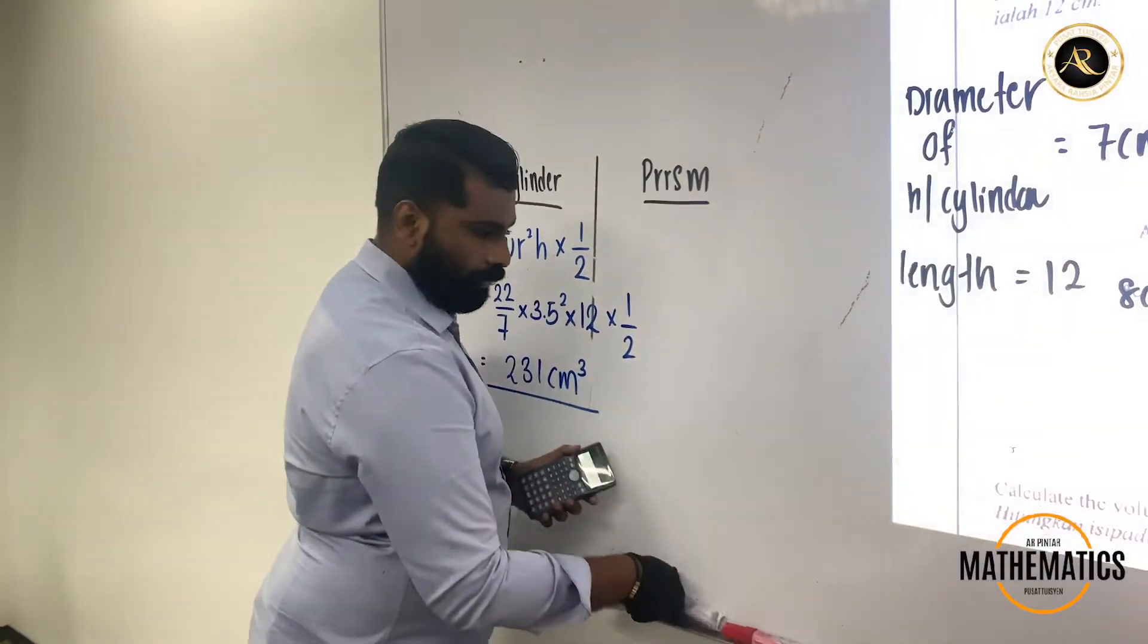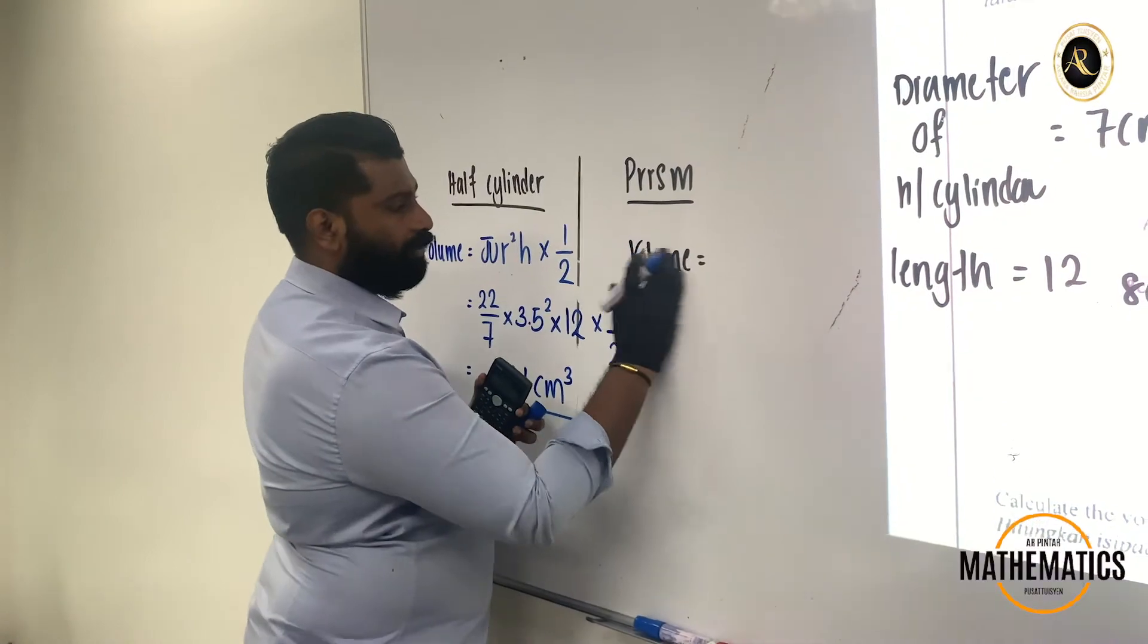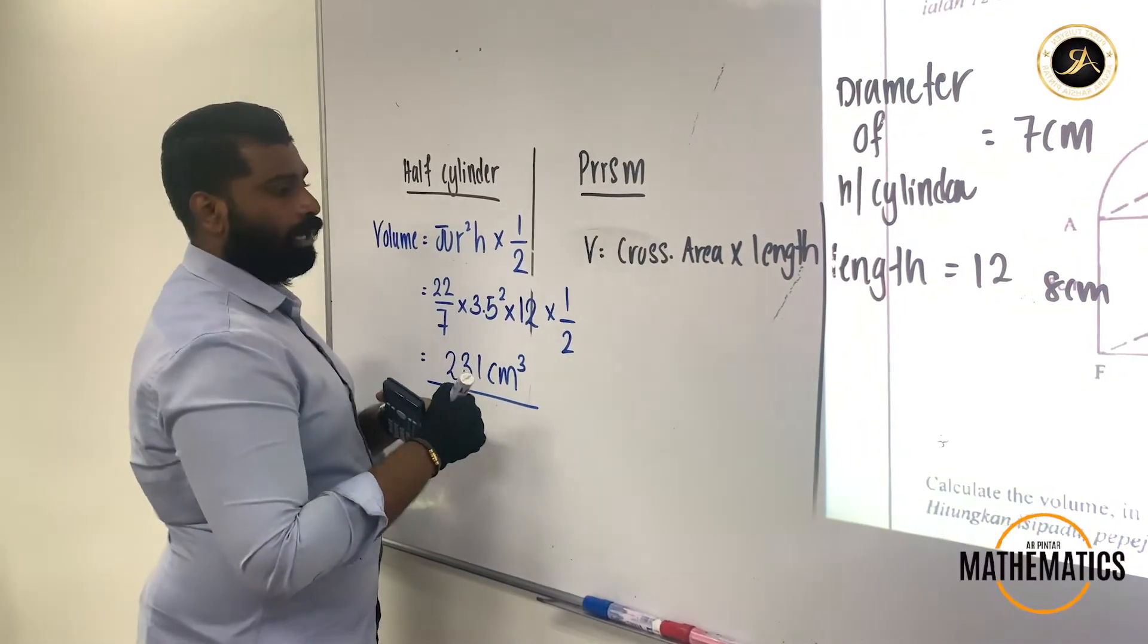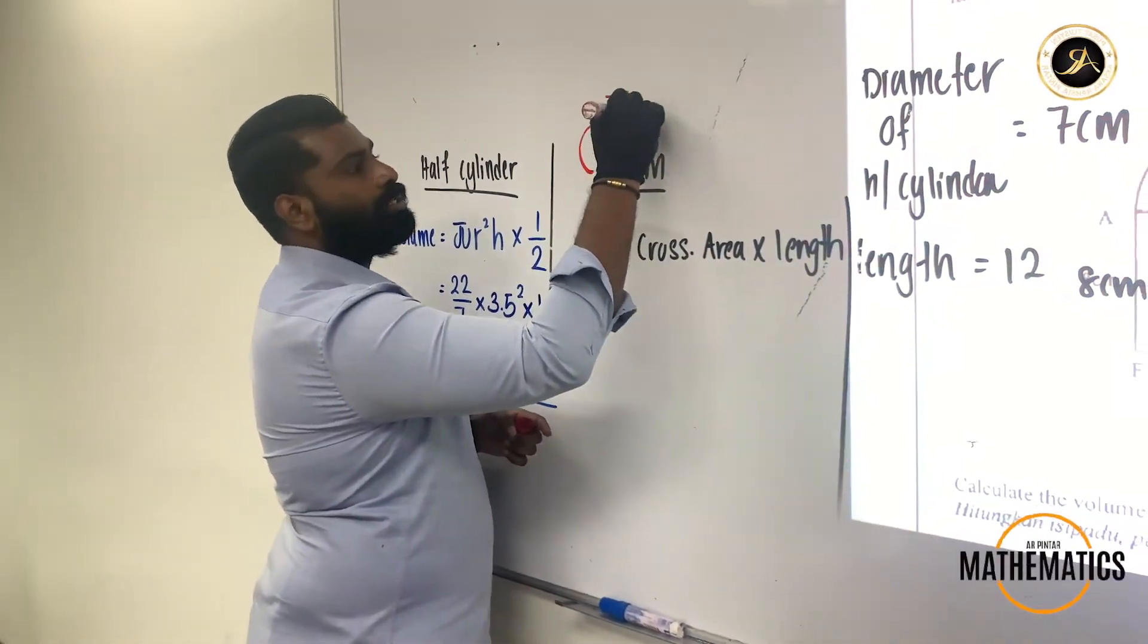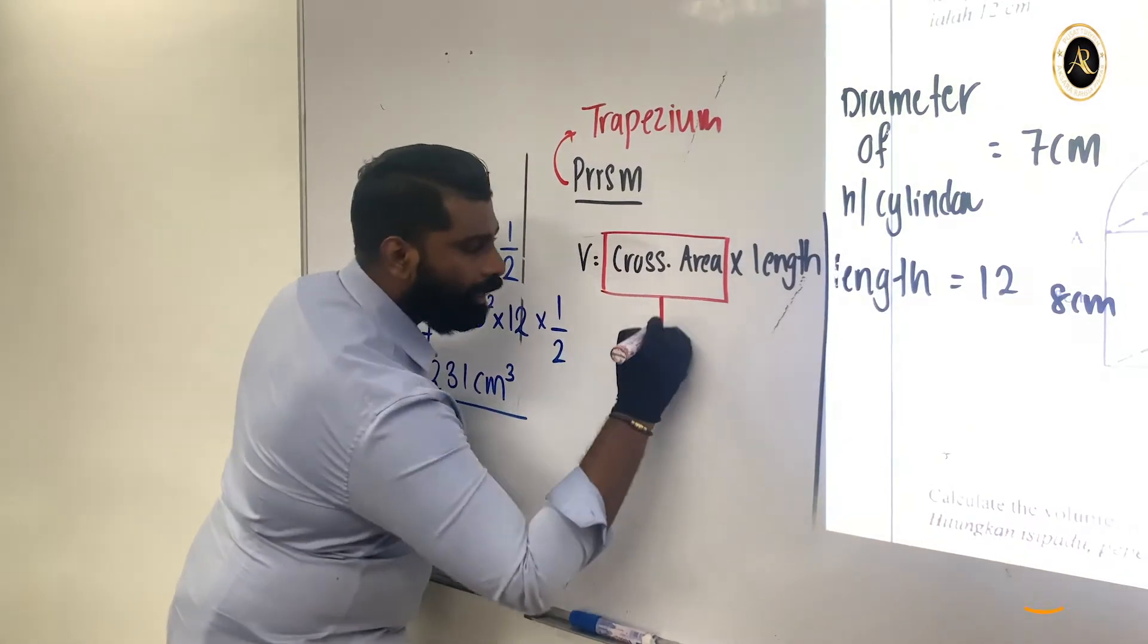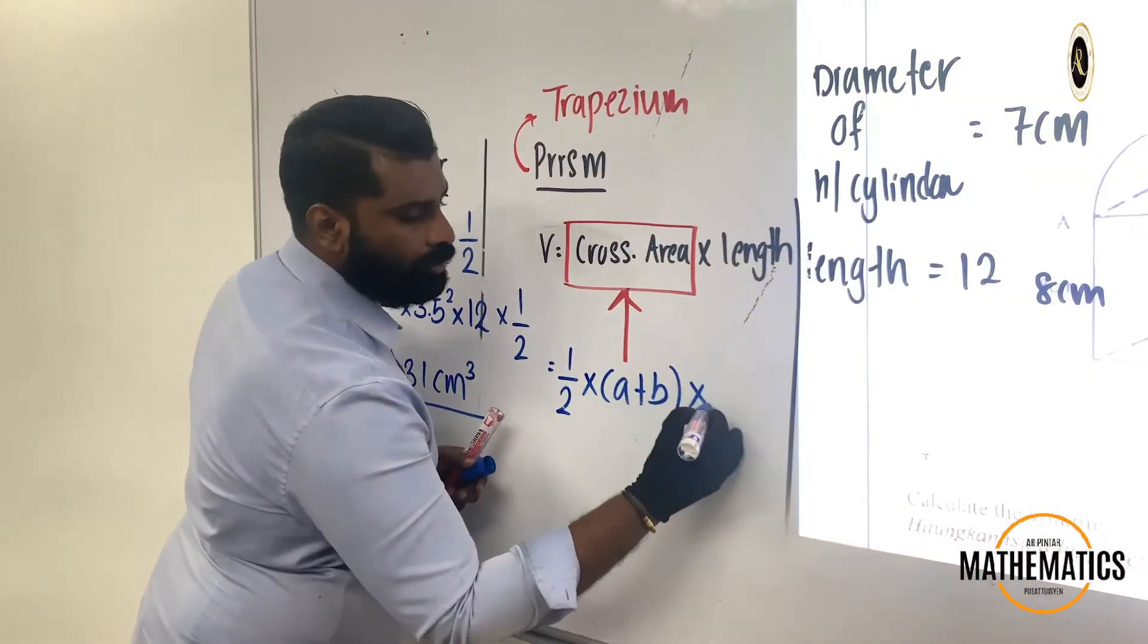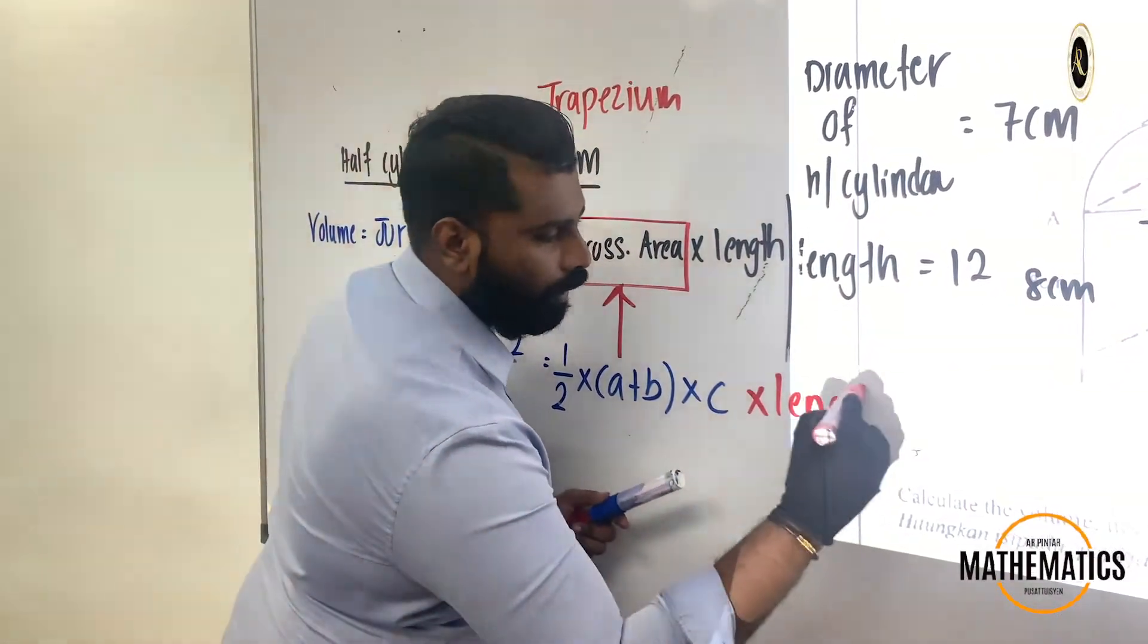Now when we come to the prism, the formula is volume equals to cross section area times with length. What happened to my cross section area? When we talk about cross section area, you must be very clear. It is related to your trapezium. For trapezium, your cross section area, how to find using the formula? There is a special formula for the trapezium: 1 over 2 times A plus B times with C. Don't forget the length, we bring it down. So that is the length.